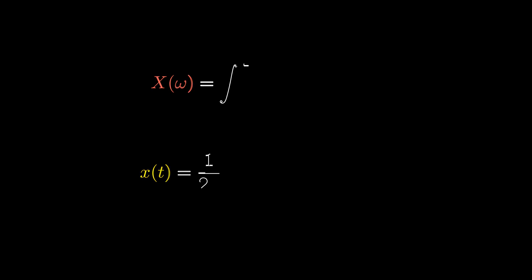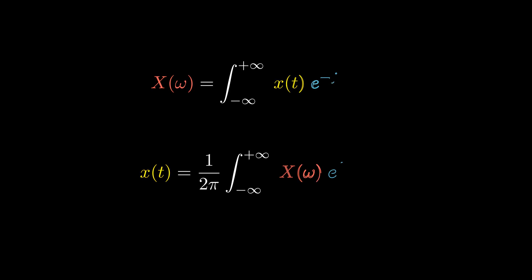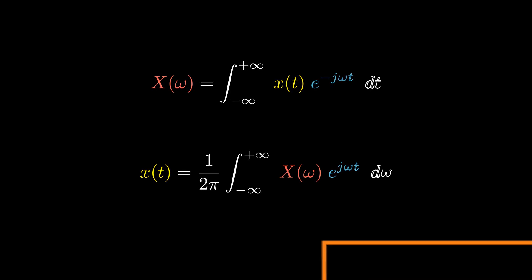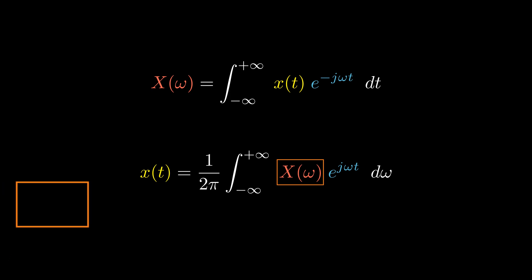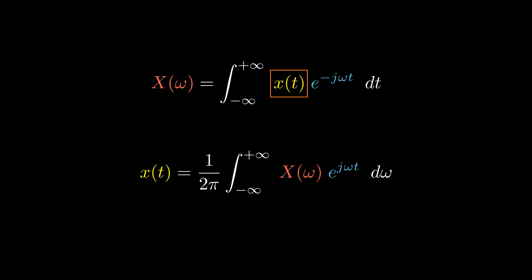These two equations are called the Fourier transform pair. Knowing the frequency domain, we can get the time domain representation, and knowing the time domain, we can get the corresponding frequency domain.